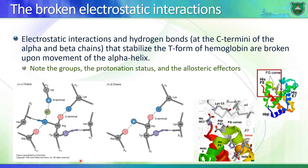Histidine 146 forms two electrostatic interactions: the carboxyl terminus of the histidine residue forms electrostatic interactions with a lysine on the alpha 1 subunit, and the R group of histidine 146 forms electrostatic interactions with aspartate 94 on the same chain — so this is intramolecular. At the same time, there are electrostatic interactions at the N-terminus of the alpha subunit with the C-terminus of the other alpha subunit.